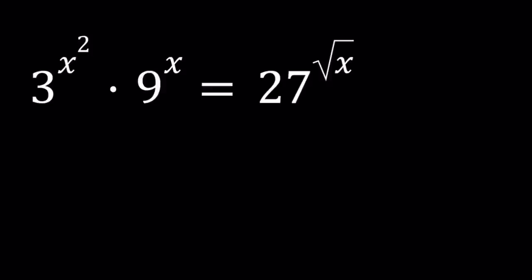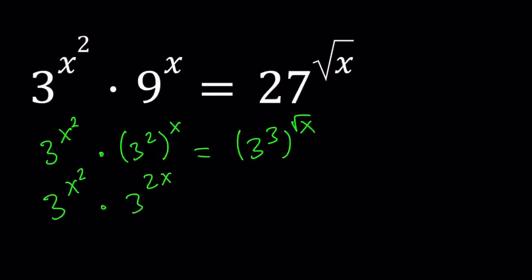Let's go ahead and manipulate this equation so we can write everything as a power of 3. I'll write 9 as 3 to the 2nd power, 27 as 3 to the 3rd power, and then we're going to multiply the exponents. 3 to the x squared, 3 to the power 2x, and 3 to the power 3 times square root of x.